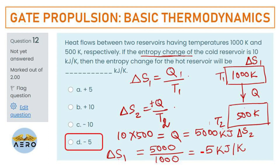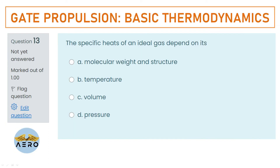The specific heat of an ideal gas depends on its — always remember: specific heat always depends on temperature only. It is the one and only dependency.